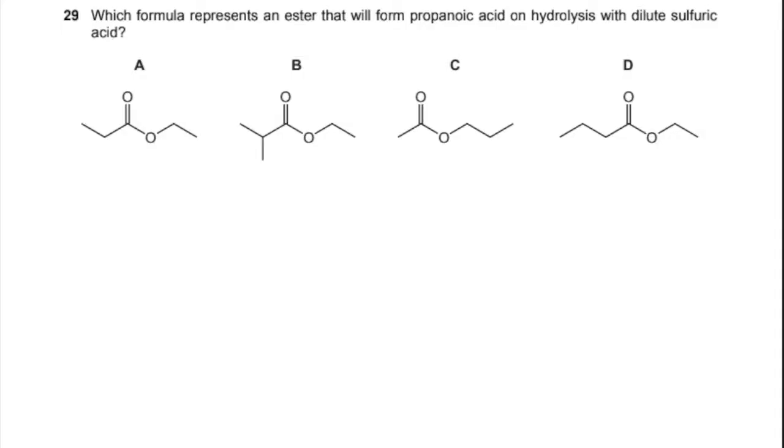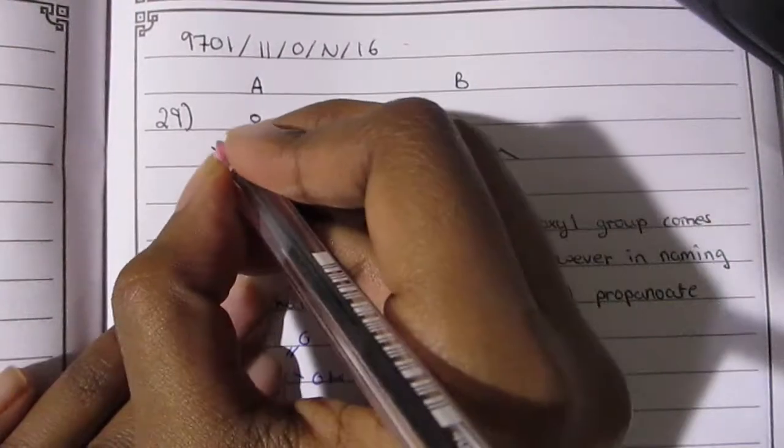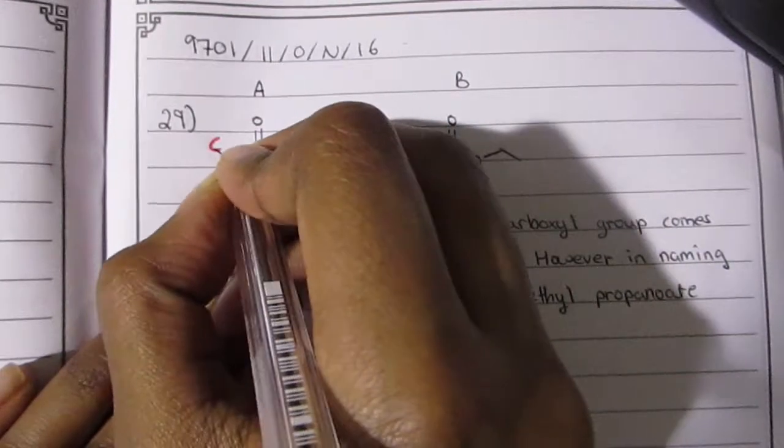The question is asking us to find out which formula will represent an ester that will form propanoic acid on hydrolysis with dilute sulfuric acid. Usually the hydrolysis of an ester is quite slow with just water, and that is why they add dilute sulfuric acid because it acts as a catalyst and can help speed up the process.